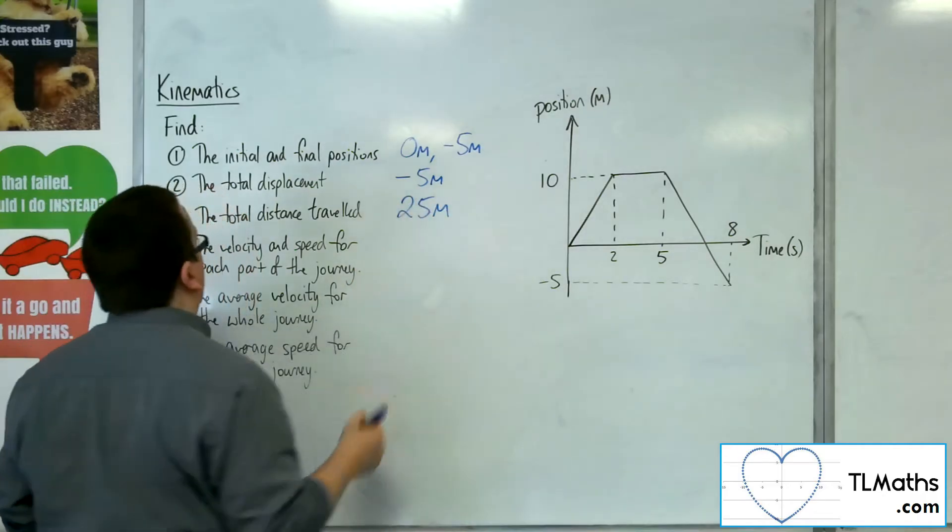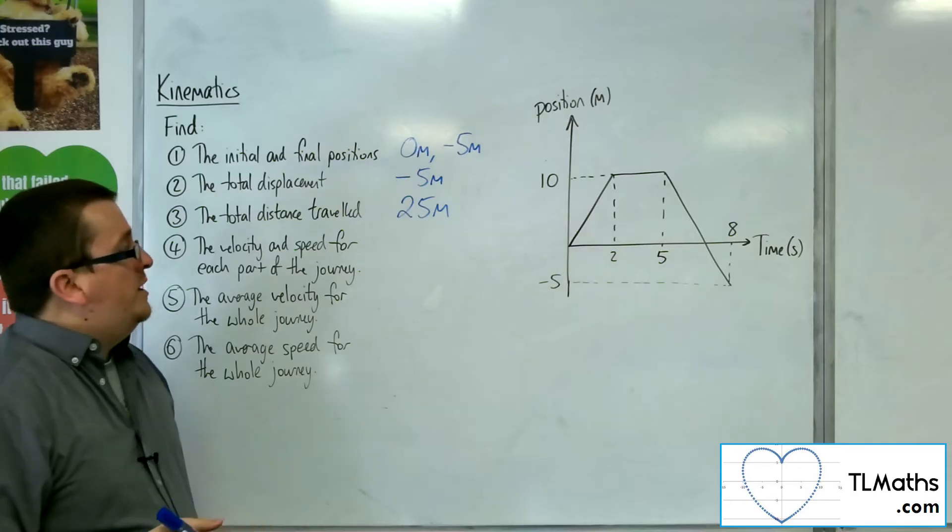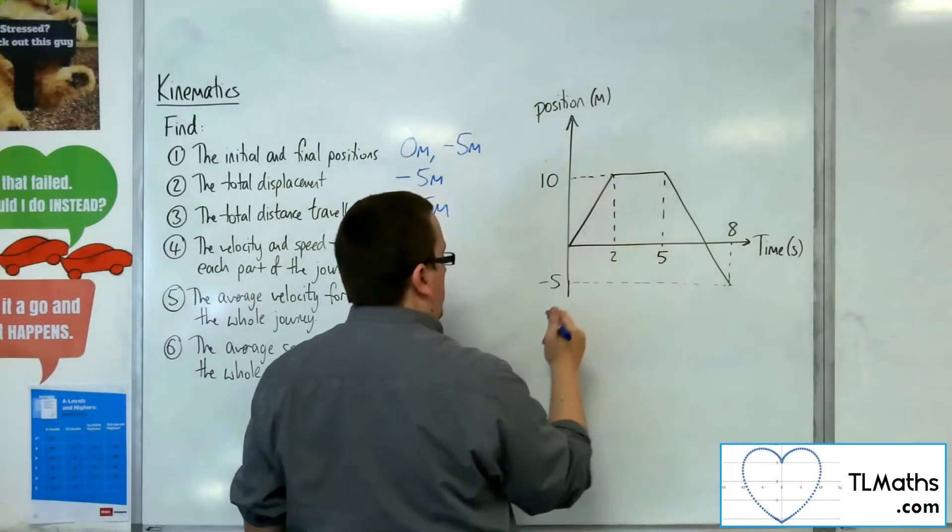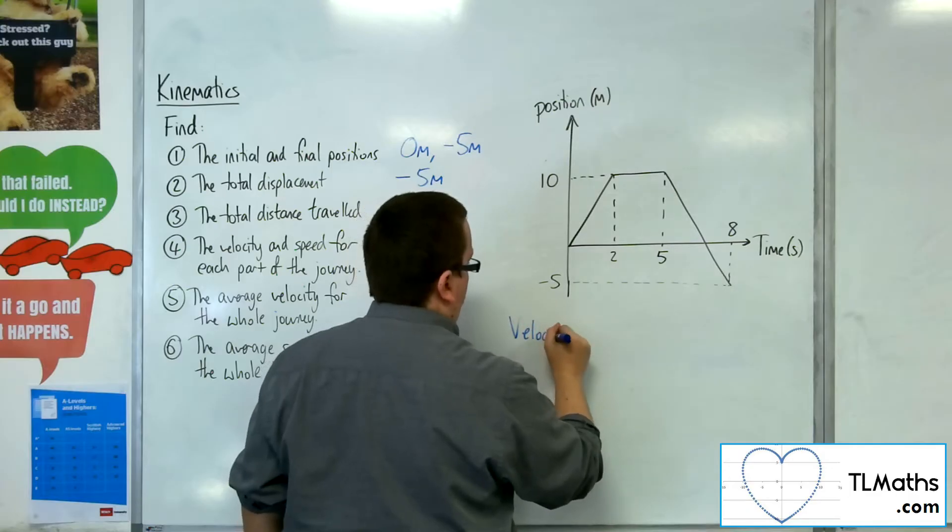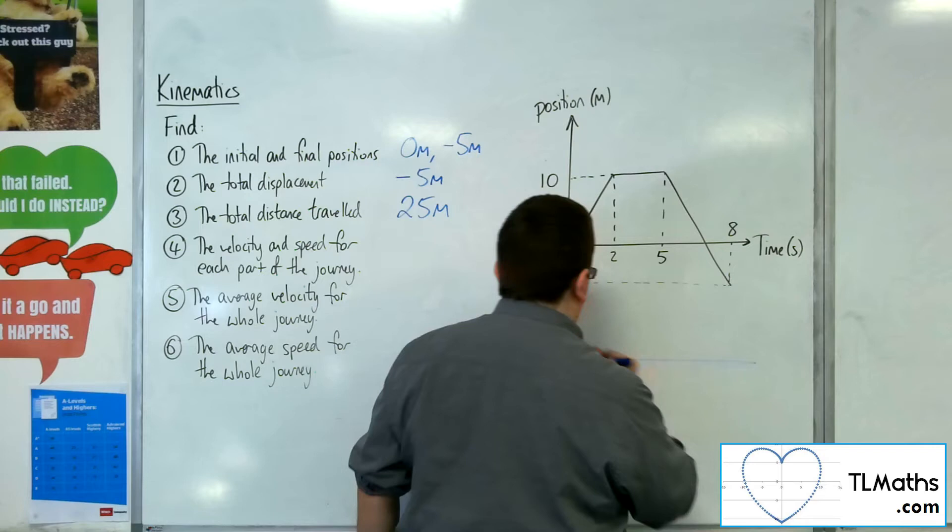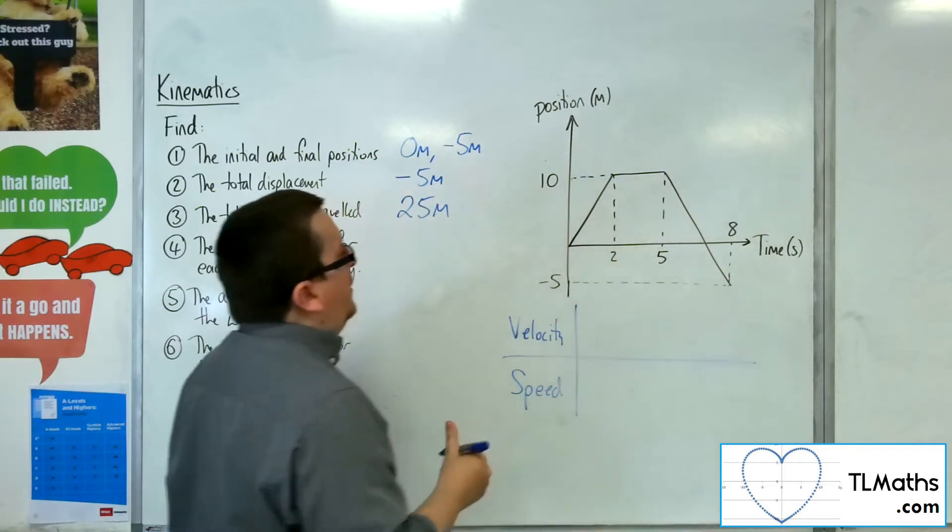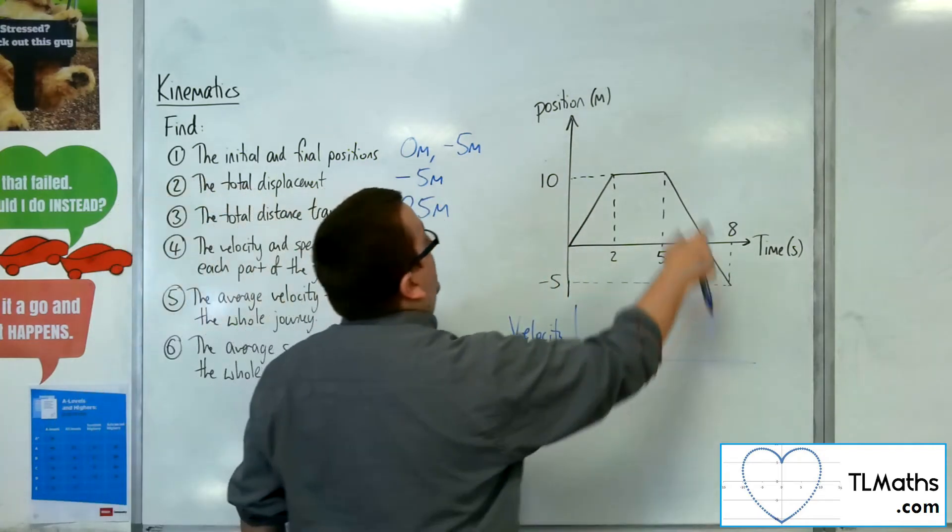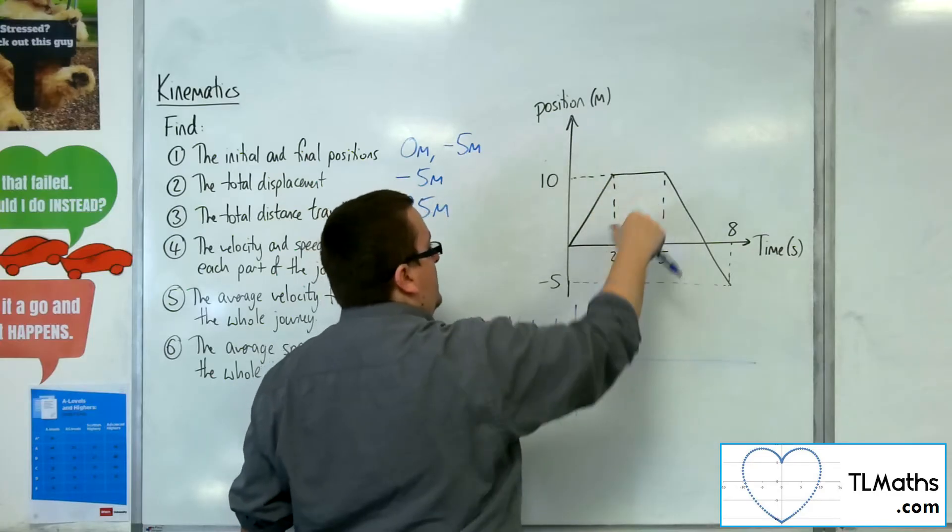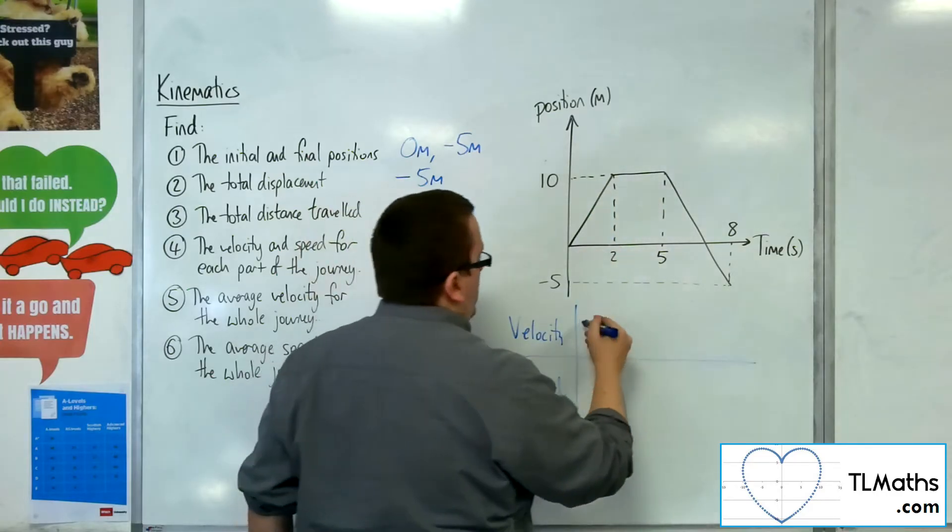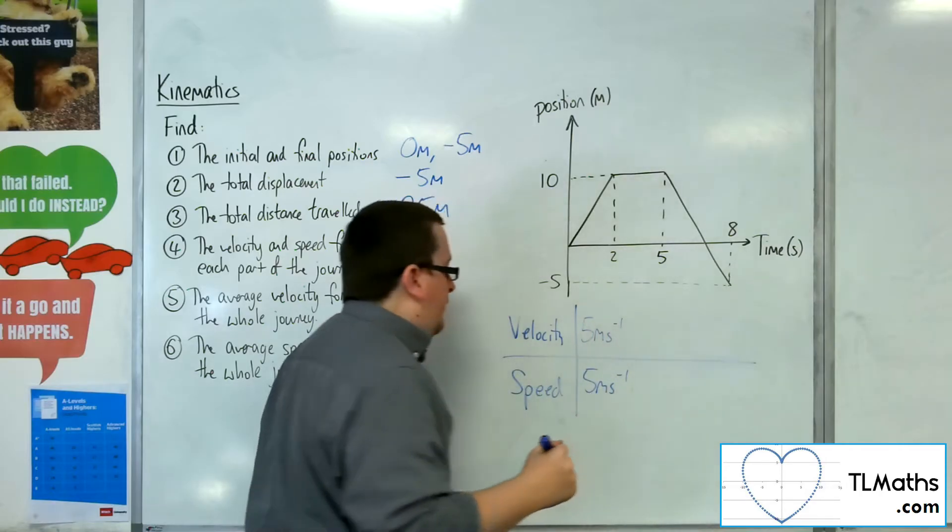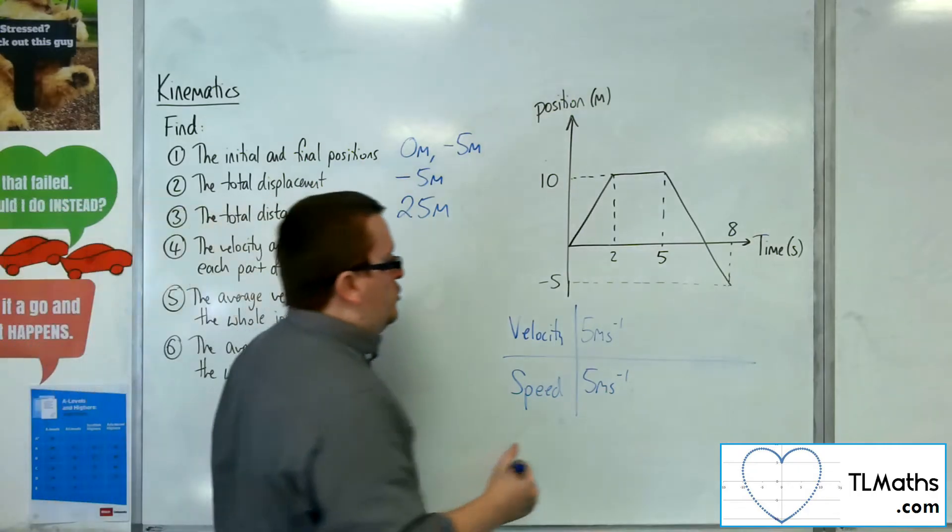So the velocity and speed for each part of the journey. If we look at the first part of the journey, if we look at velocity and speed, for that first section, it's the 10 divided by 2, 10 divided by 2 there, so it would be 5 metres per second for both velocity and speed for that first section.